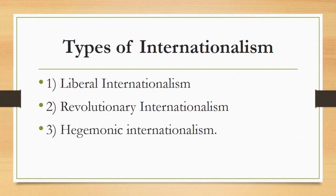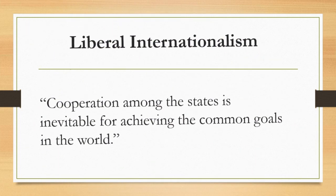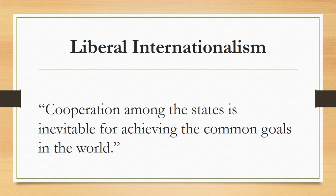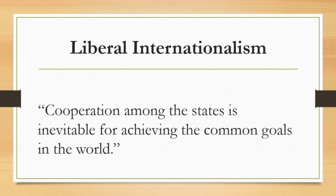There are three basic types of internationalism: liberal internationalism, revolutionary internationalism, and hegemonic internationalism. The first is liberal internationalism. According to liberal internationalism, cooperation among states is inevitable for achieving common goals in the world. The United Nations is an example, as it is an international body working for cooperation among states for global goals.